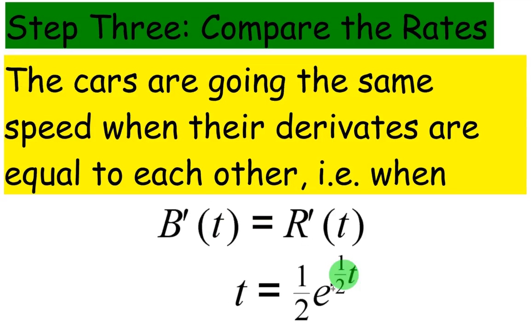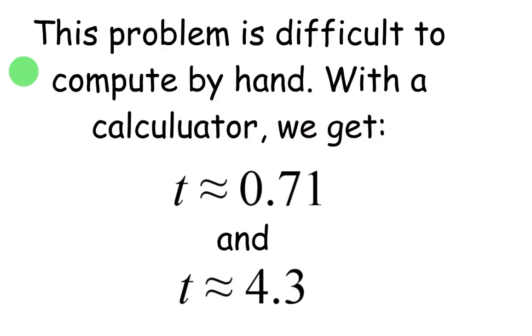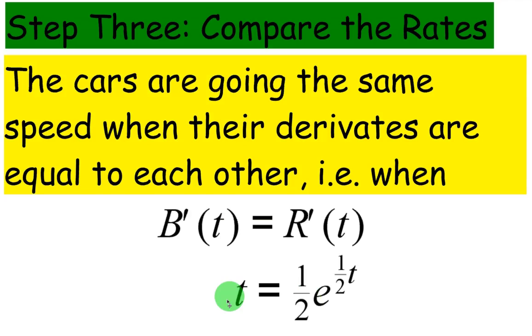You're pretty much going to need a calculator for this. There are different ways to do it. Just subtract t from both sides and graph that equation. So 1/2 e to the 1/2 t minus t equals zero. Find the x-intercepts. That will give you where they equal each other.